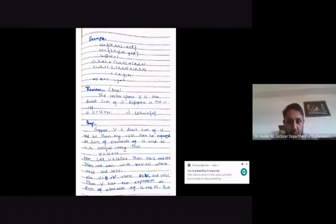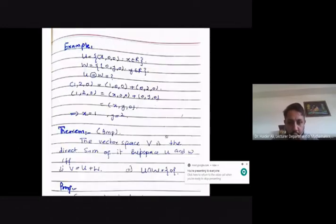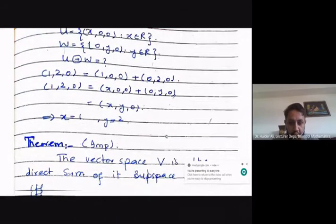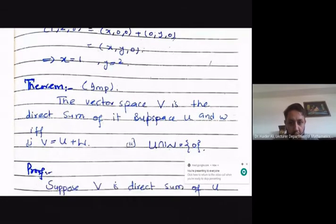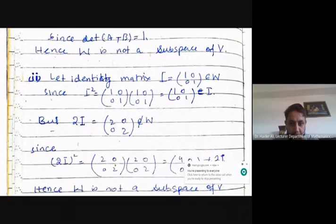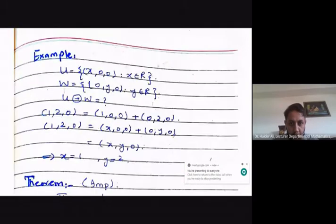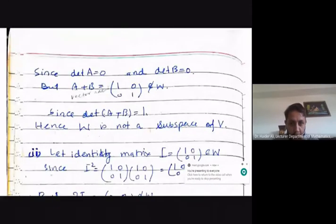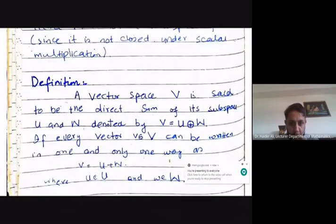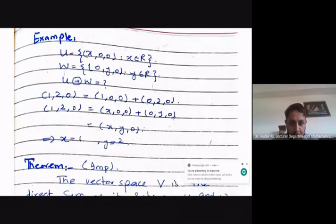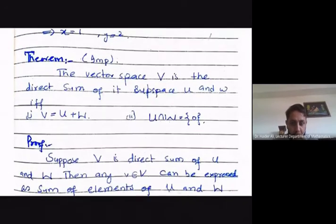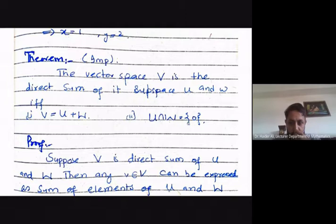Bismillahirrahmanirrahim, Allahumma salli ala Muhammad wa ala ali Muhammad. Okay my dear students, where we have left the whole topic, so we are there. So, the definition: we are on this theorem. The vector space V is the direct sum of its subspaces U and W if and only if V is equal to U plus W and U intersection W is equal to zero.